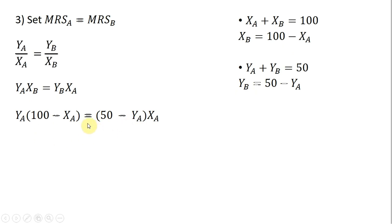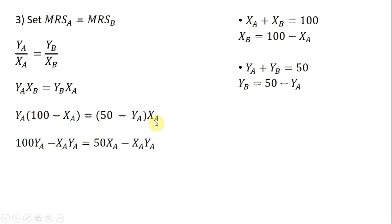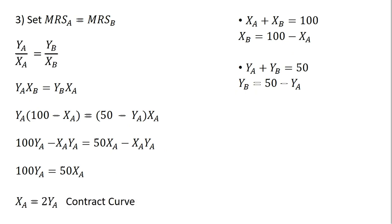Now I'm just going to simplify this and solve for X_A. Multiplying what's in parentheses on the left-hand side through by Y_A, and on the right-hand side multiplying through by X_A, we get this result. Note that we can cancel like terms that appear on both sides, leaving us with this result. Dividing through by 50, we have the contract curve — a straight-line contract curve. That's it, I hope you found this video helpful.